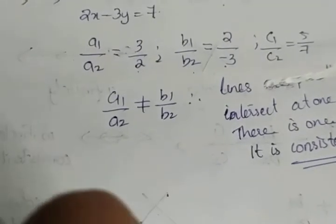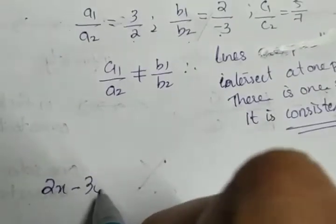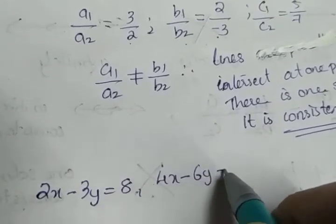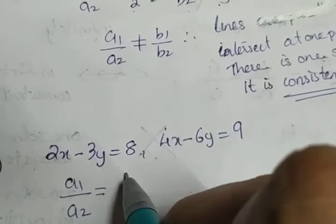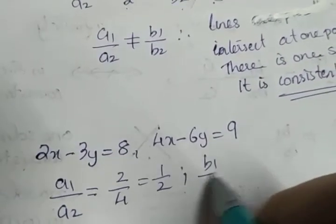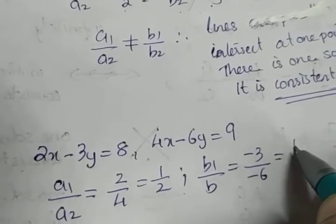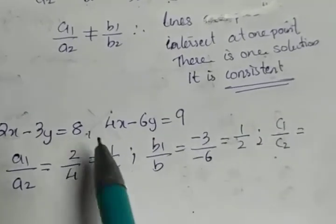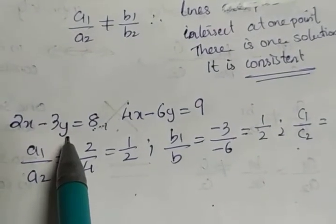Moving to the second part of that question. The second part is 2x minus 3y is equal to 8 and 4x minus 6y is equal to 9. Find a1 by a2: it is equal to 2 by 4, which is 1 by 2. b1 by b2 is minus 3 by minus 6, which is 1 by 2. Now find c1 by c2.